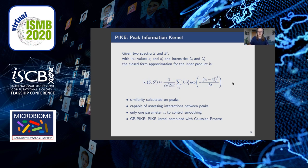Our PIKE kernel was inspired by the heat diffusion equation. In it, every peak in s is compared with every other peak in s'. Their peak intensities are multiplied and weighted by an exponential function, and the further away the two peaks are from one another, the smaller this weight is.